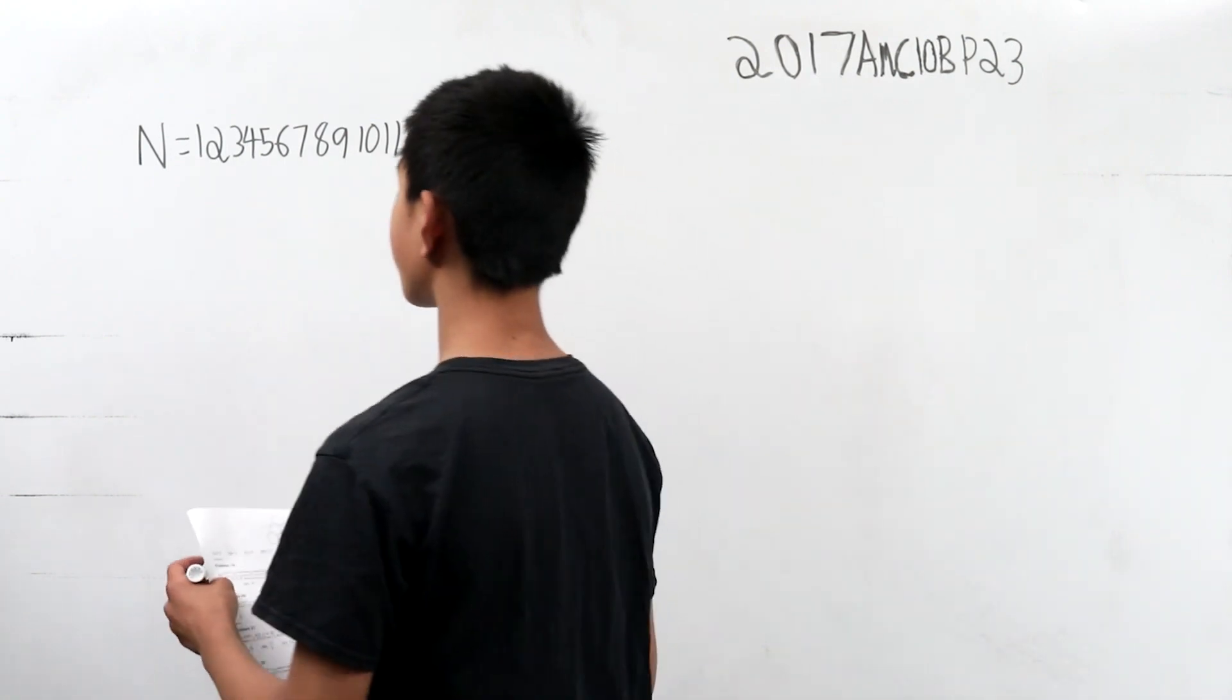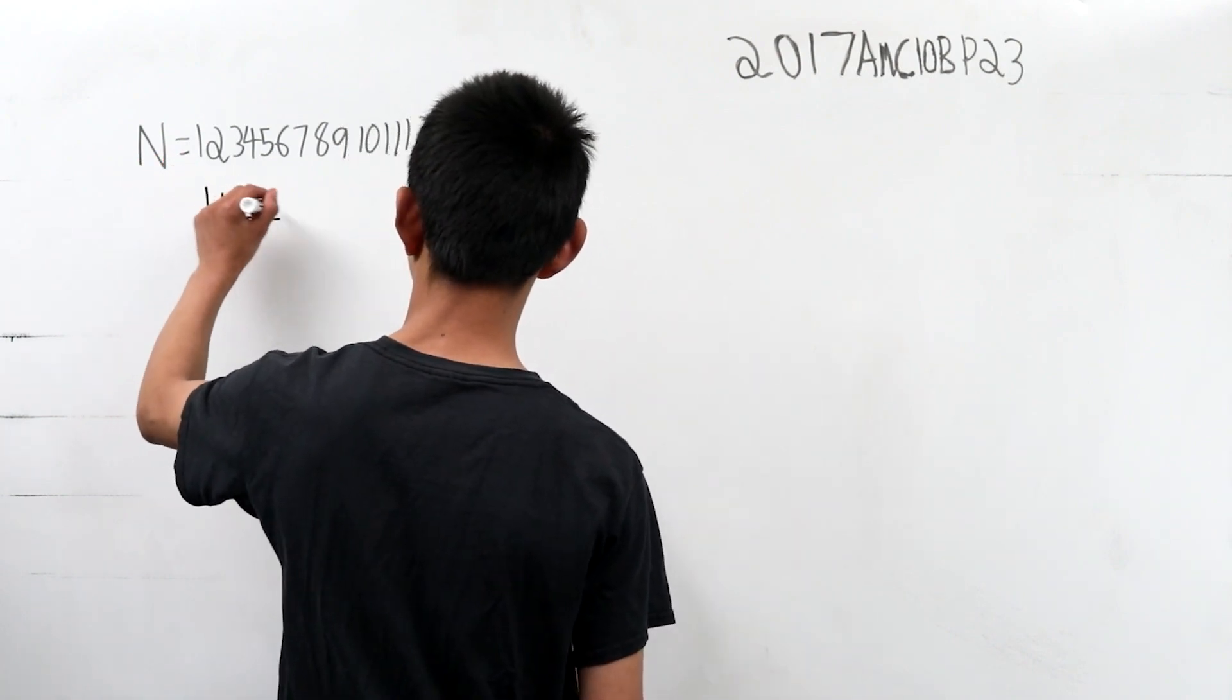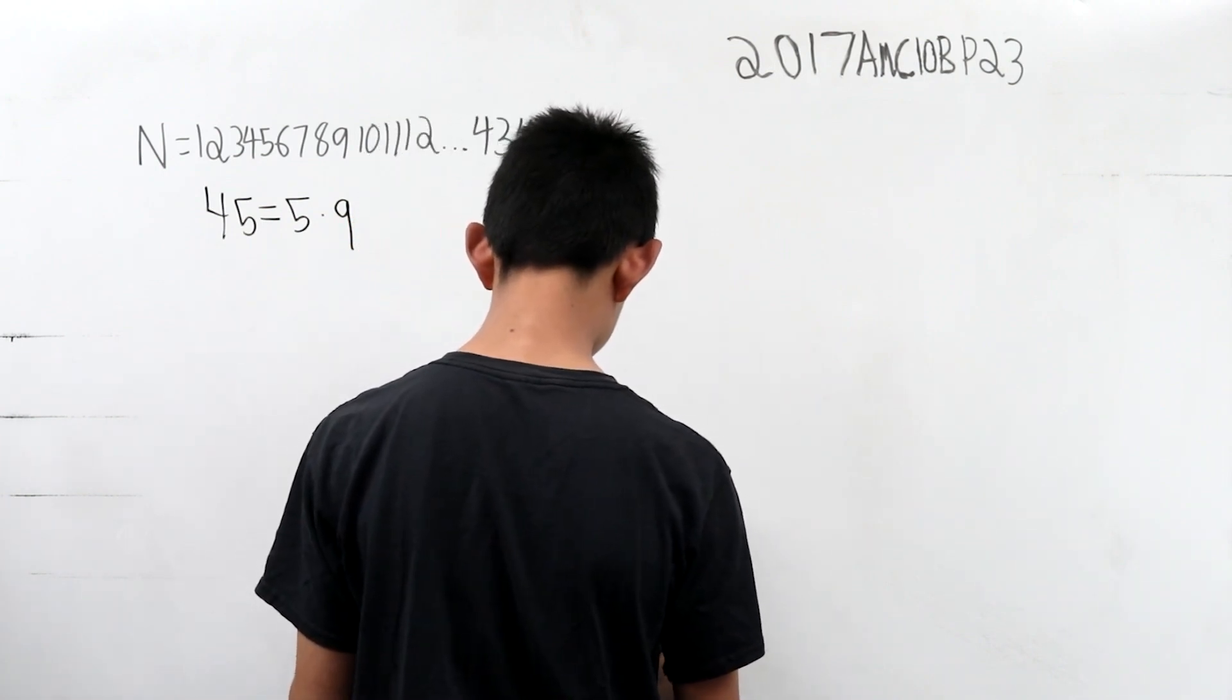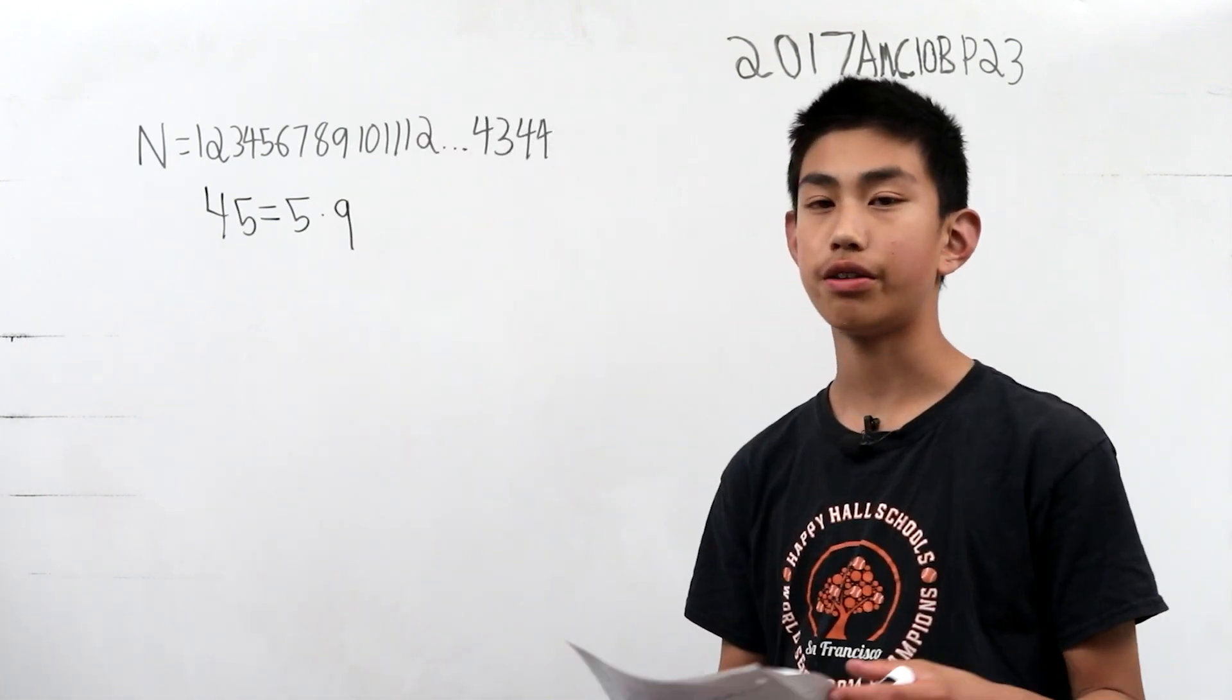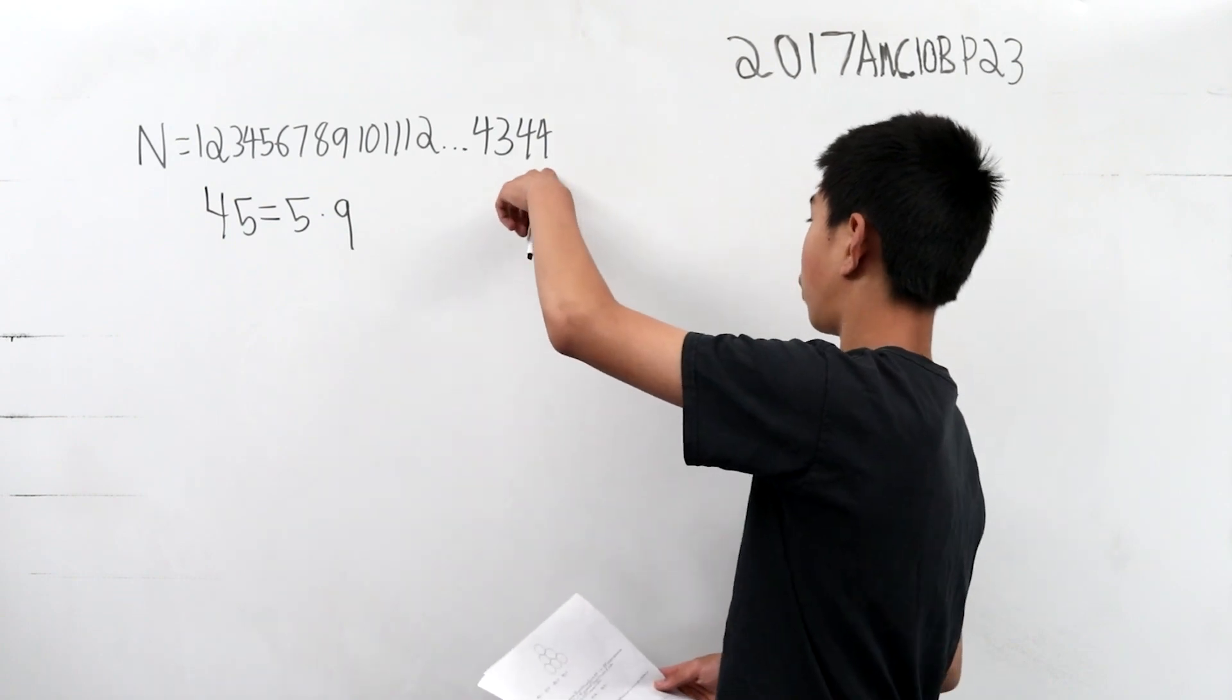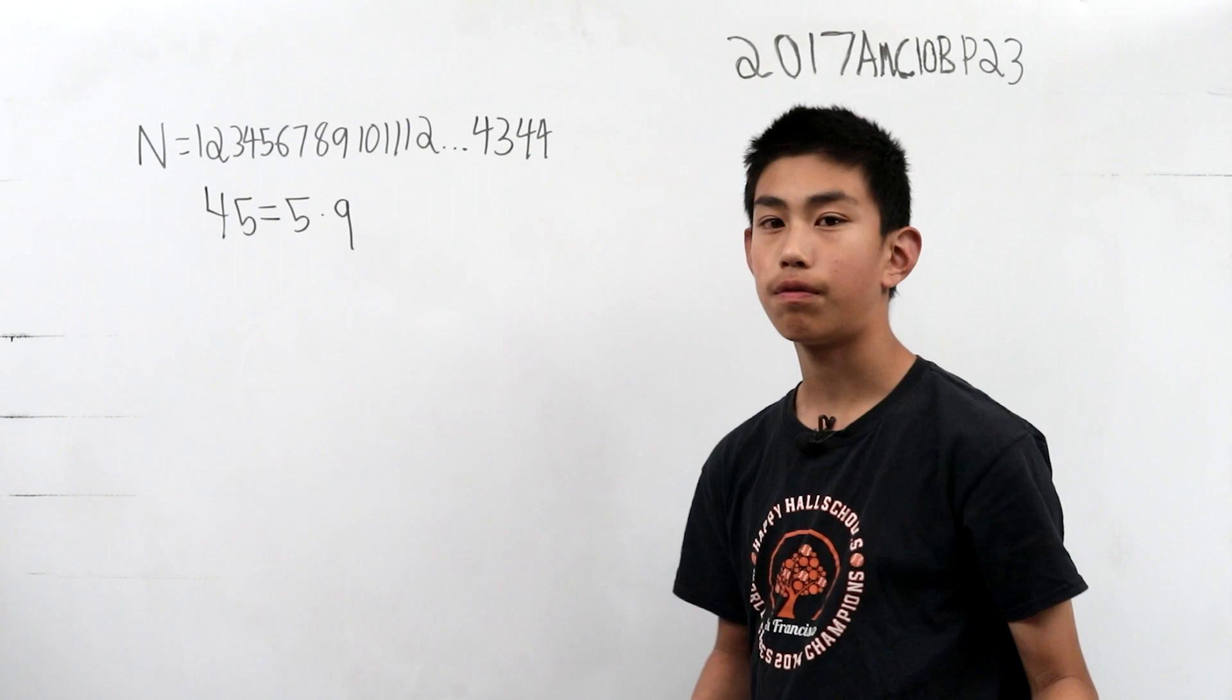So the first thing we can realize is that 45 is 5 times 9. Now, we also know that for the number to be divisible by 5, it has to end in 5 or 0. We see that this is 4 mod 5 because it ends in 4, not 5.